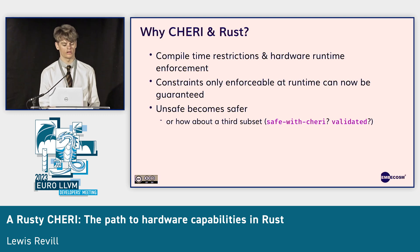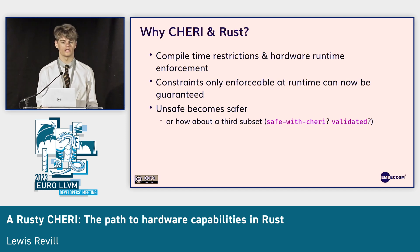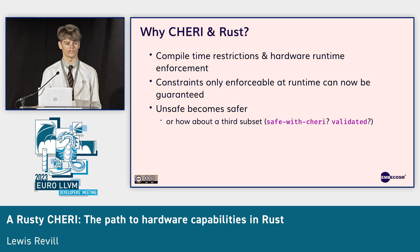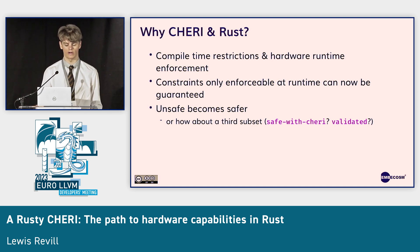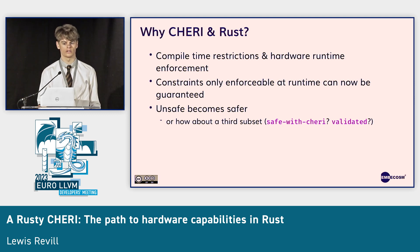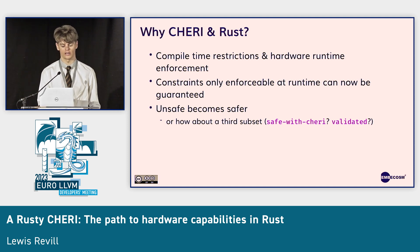Why do we want to combine CHERI and Rust? Essentially, we want to get the compile time restrictions of Rust and combine them with the hardware runtime enforcement offered by CHERI, so that if we have constraints that can't be analyzed at compile time but can only be enforced at runtime, then we can now guarantee that those constraints will be enforced. In other words, we want to make unsafe Rust code a little bit safer. There's also discussion of a third subset — code that is safe when CHERI is used as a target.